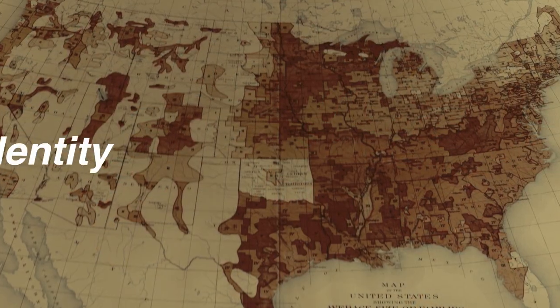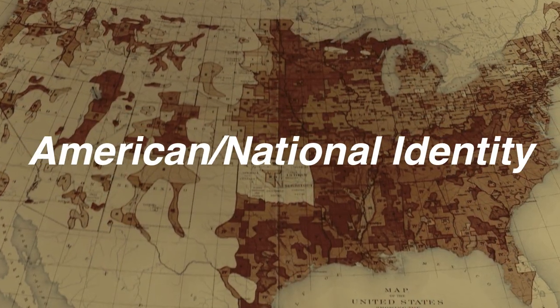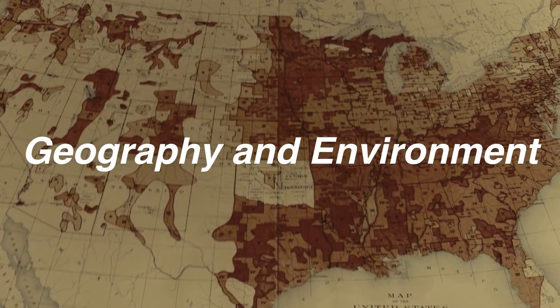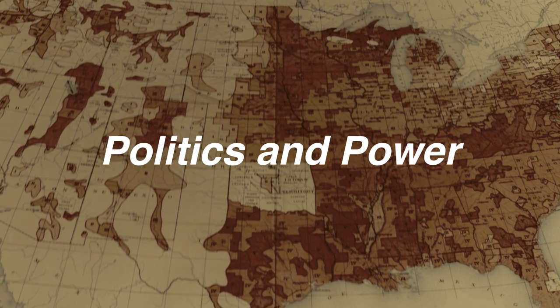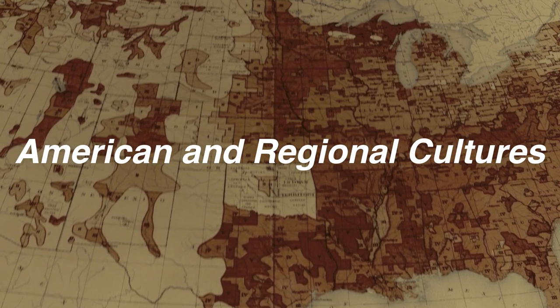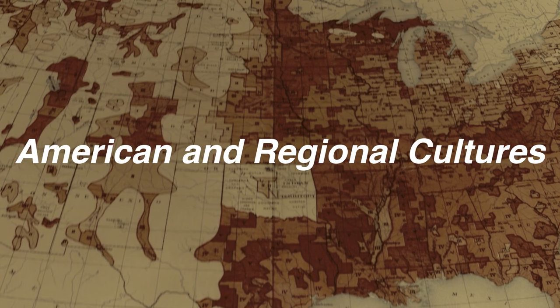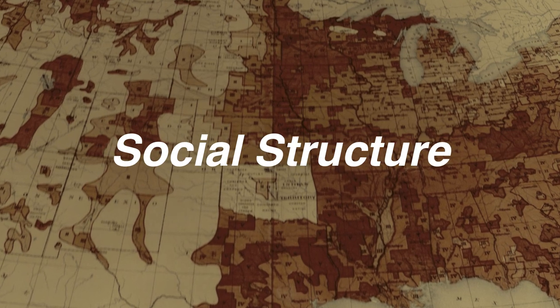AP U.S. History students will develop the skills of a historian, including analyzing primary and secondary sources, developing historical arguments, and making historical connections as we explore concepts like American and national identity, geography and the environment, migration and settlement, politics and power, American and regional cultures, and social structure.